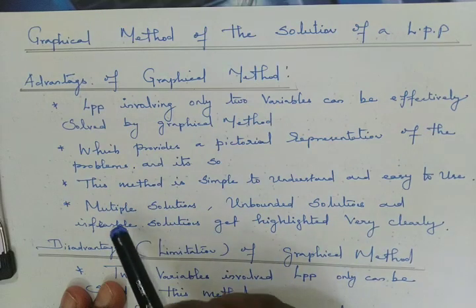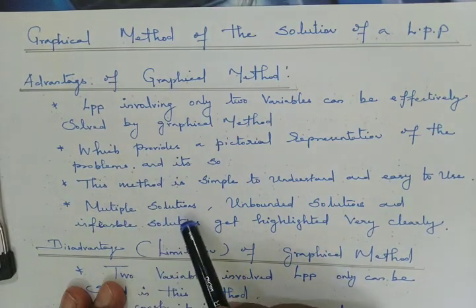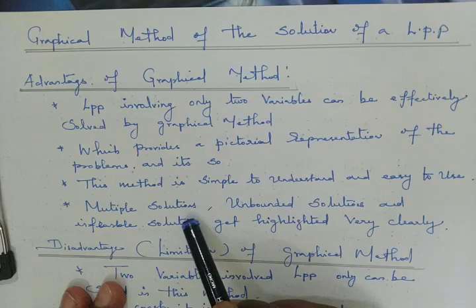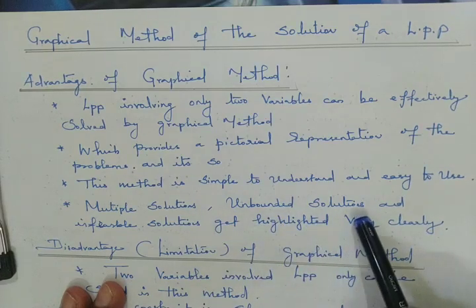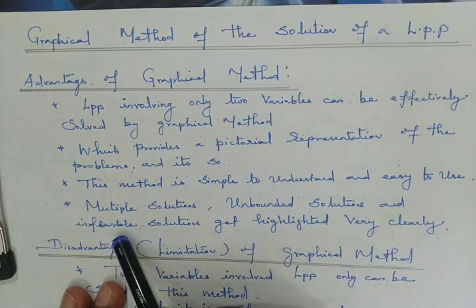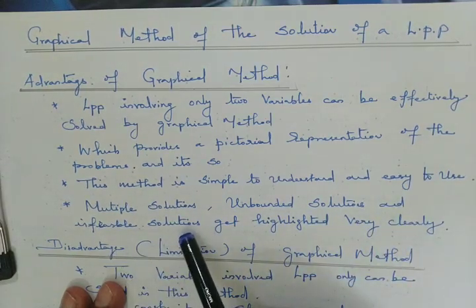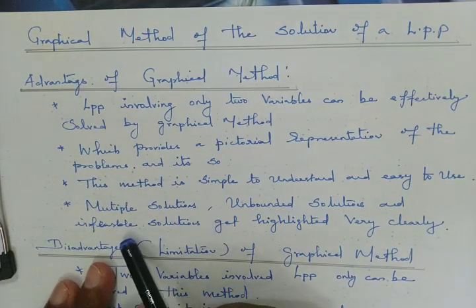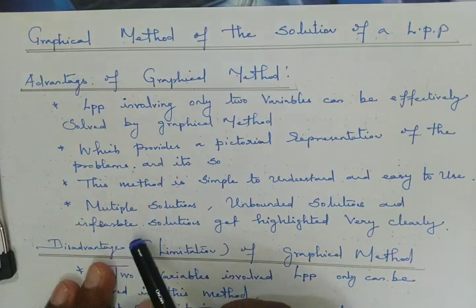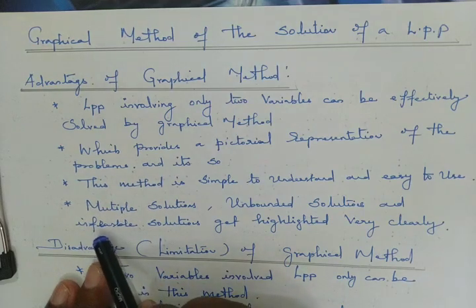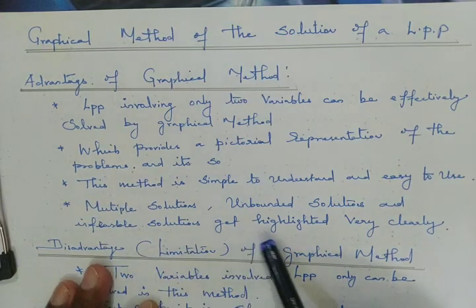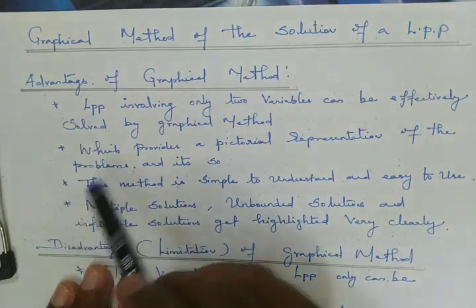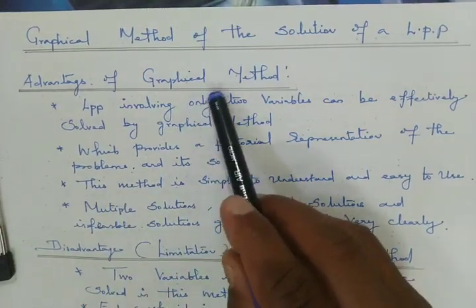In this method we can find out multiple solutions — meaning more than one solution — as well as unbounded solutions and infeasible solutions. When an infinite number of solutions exist, the infeasible solutions get highlighted very clearly. These are the four advantages we have in the graphical method.